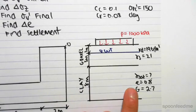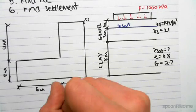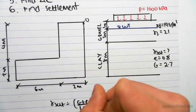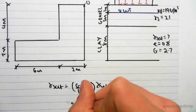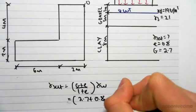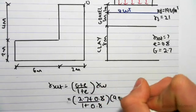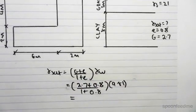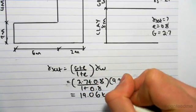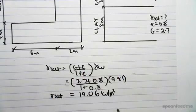So the first thing we need to do is find gamma saturated. We know that gamma sat is equal to G plus E over 1 plus E, times gamma W. So we have all this information: G is 2.7 plus the initial void ratio which is 0.8 on top of 1 plus the initial void ratio, times the saturated weight of water which is 9.81. If we calculated this we'd get 19.06 kilonewtons per meter cubed. So there is the saturated unit weight of clay.